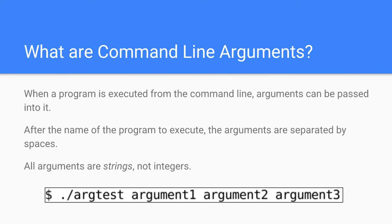All arguments are strings, not integers. As you can see in this screenshot from the command line, I have a program called argtest. I type dot slash argtest, then space argument one, space argument two, space argument three. After you type the name of your program, you put a space and then insert an argument, space another argument. Those are your command line arguments.